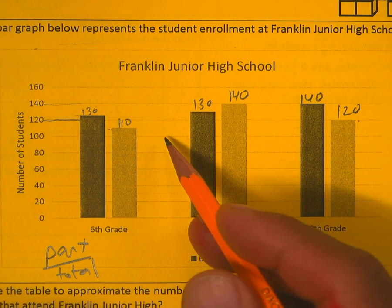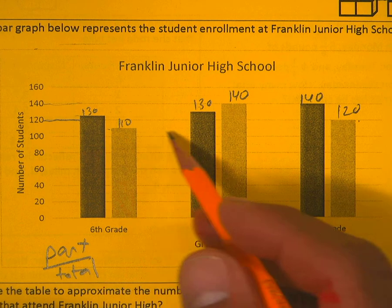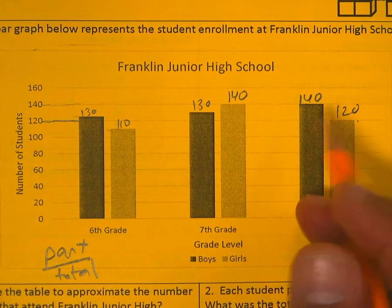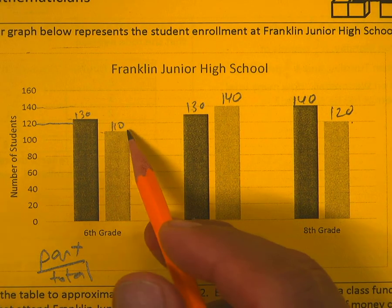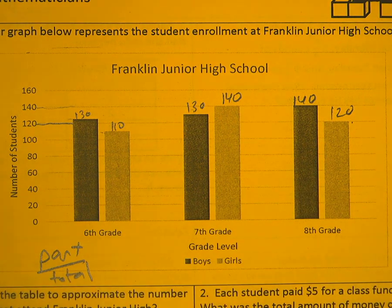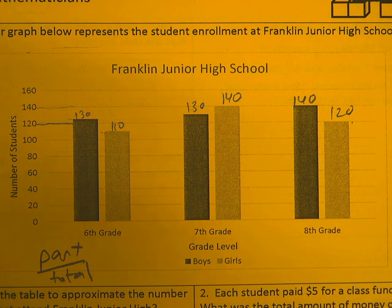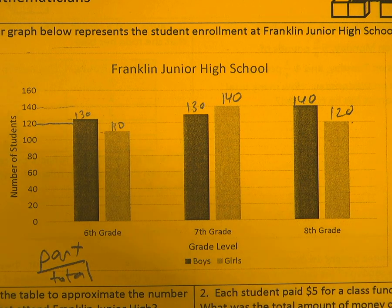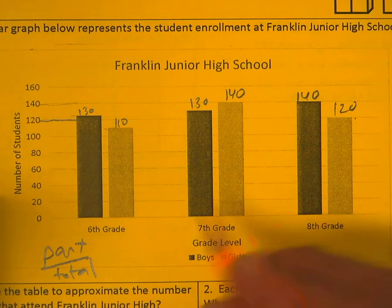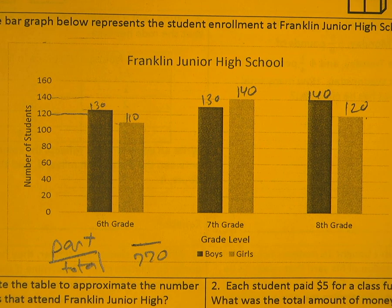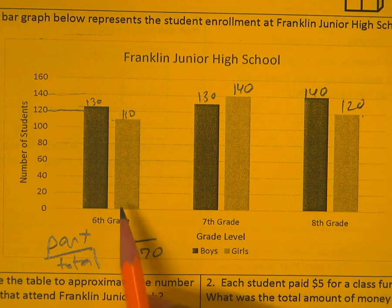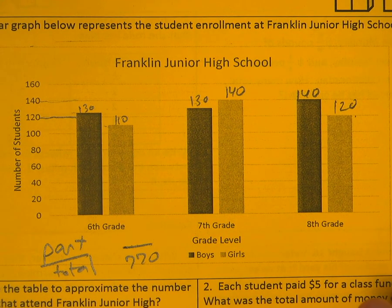These are all part of the enrollment. So the total would be 130 plus 110 plus 130 plus 140 plus 140 plus 140 plus 120. According to my approximations, that gives me a total of 770.